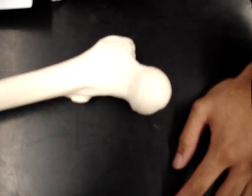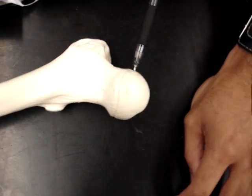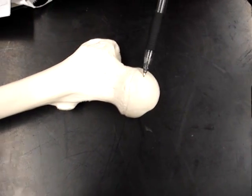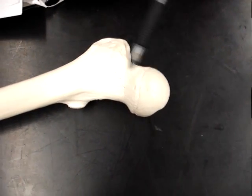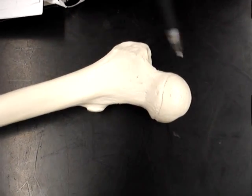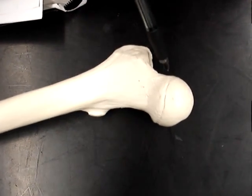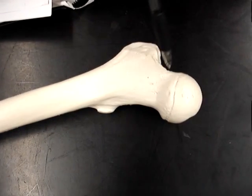So we have the femur. First we have the head, which is always medial. And then at the bottom of the head we have the neck, which would be this area right here.